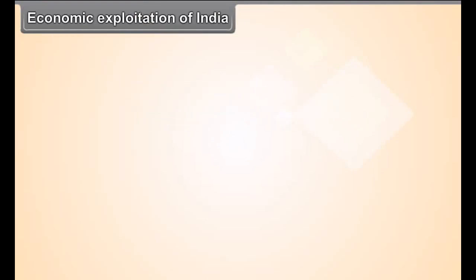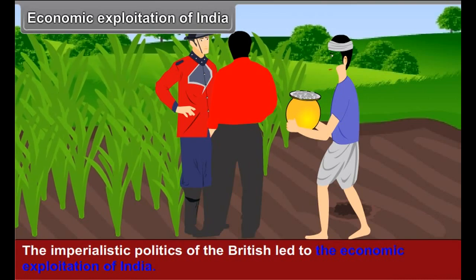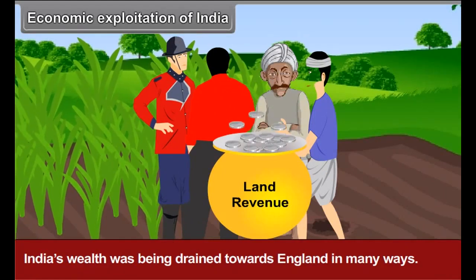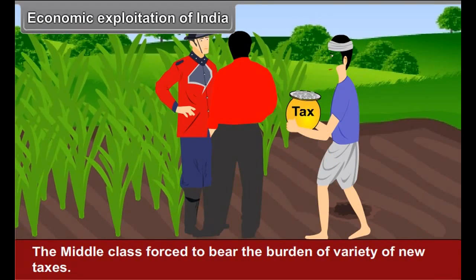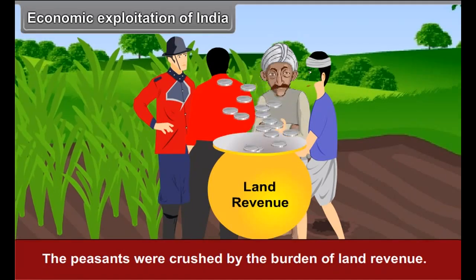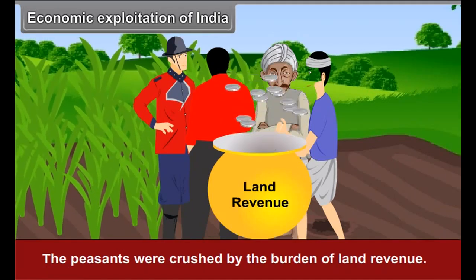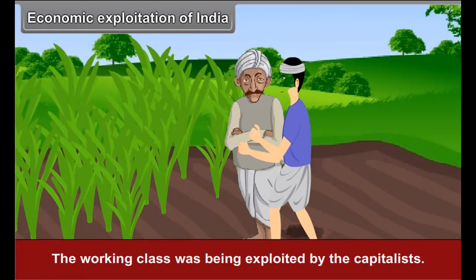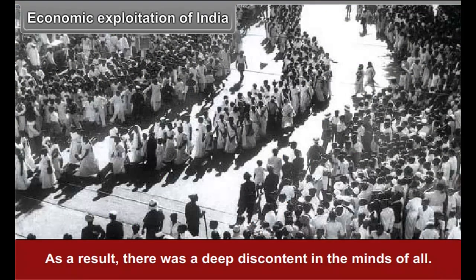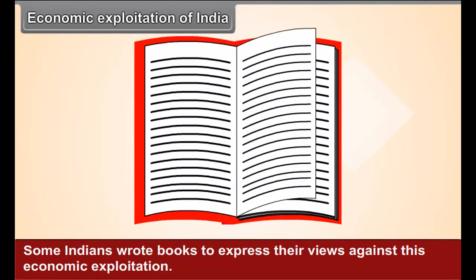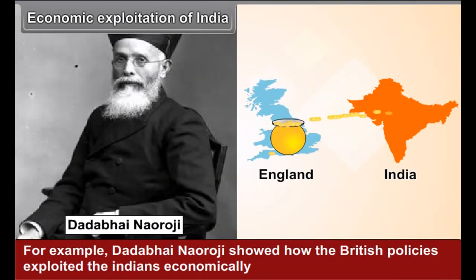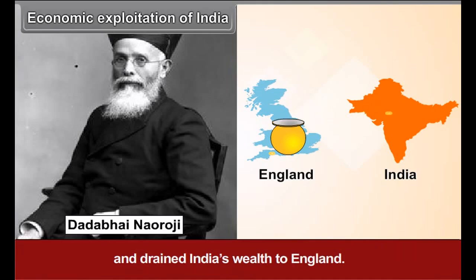Economic Exploitation of India: The imperialistic policies of the British led to the economic exploitation of India. India's wealth was being drained towards England in many ways. The middle class was forced to bear the burden of a variety of new taxes. The peasants were crushed by the burden of land revenue, and their wretched condition was made even worse due to famines. The working class was being exploited by the capitalists. As a result, there was deep discontent in the minds of all. Some Indians, like Dadabhai Naoroji, wrote books showing how British policies exploited Indians economically and drained India's wealth to England.